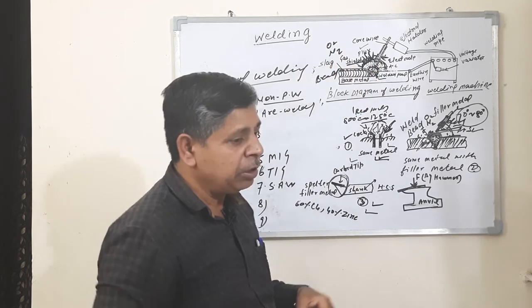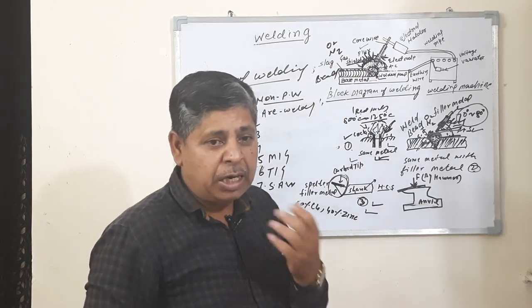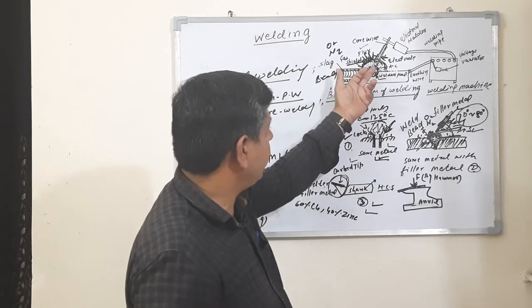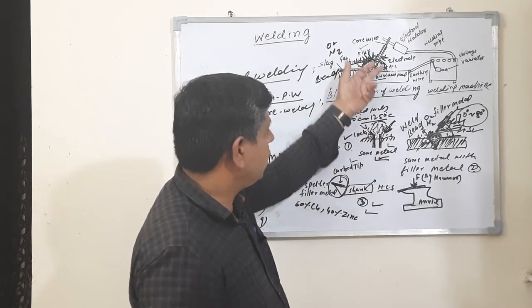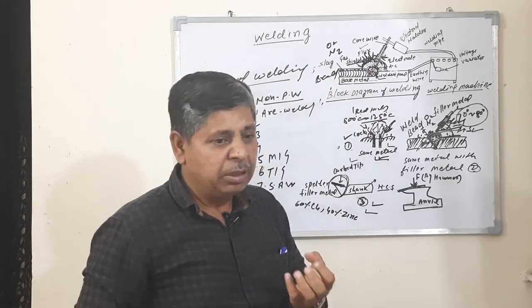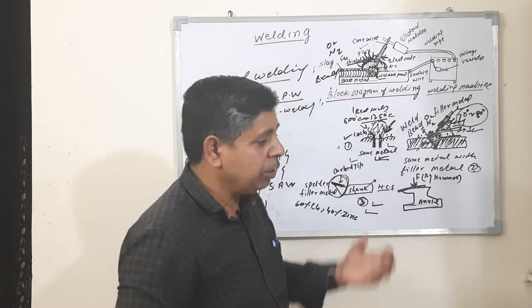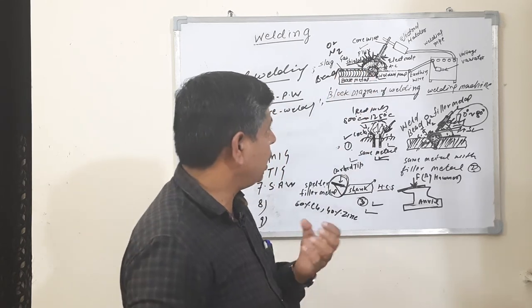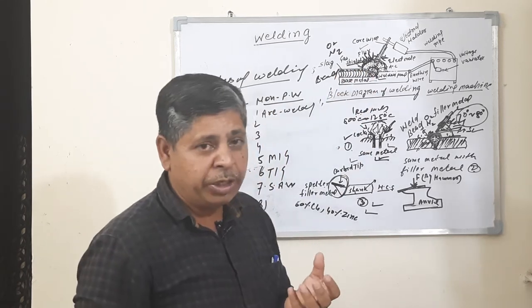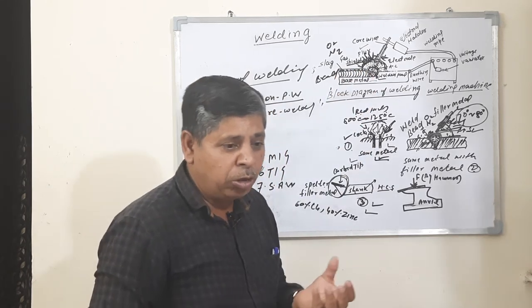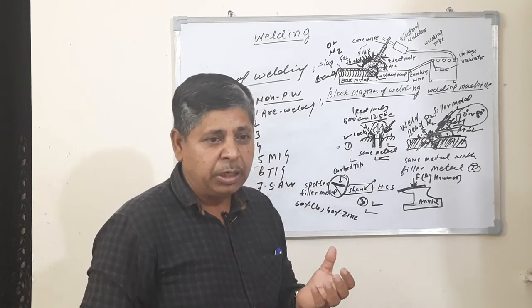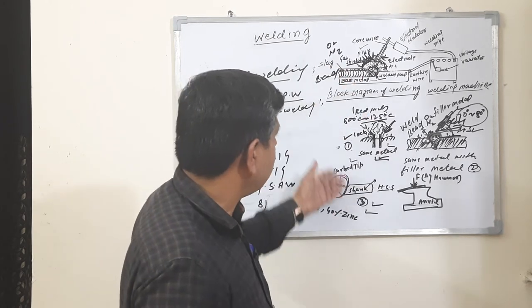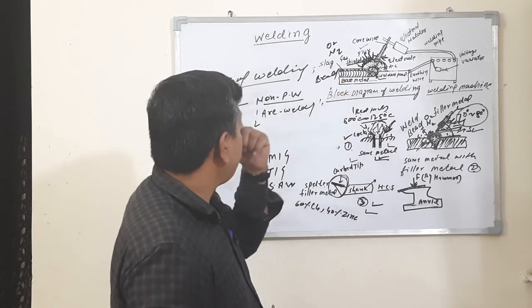Nitrogen promotes hardness and brittleness of the joint, which are weaknesses of the weld joint. Nitrogen also promotes corrosion.